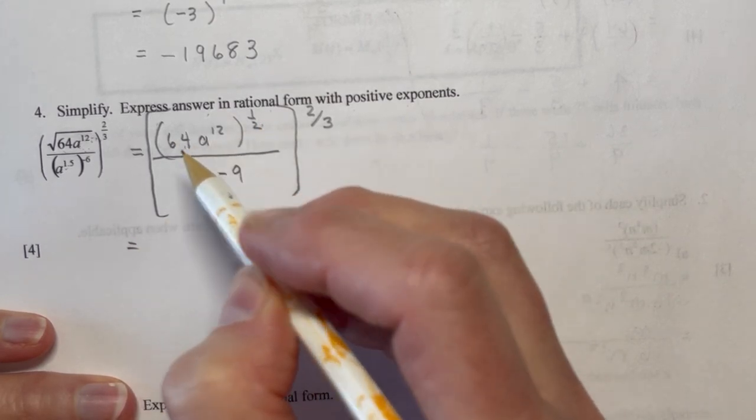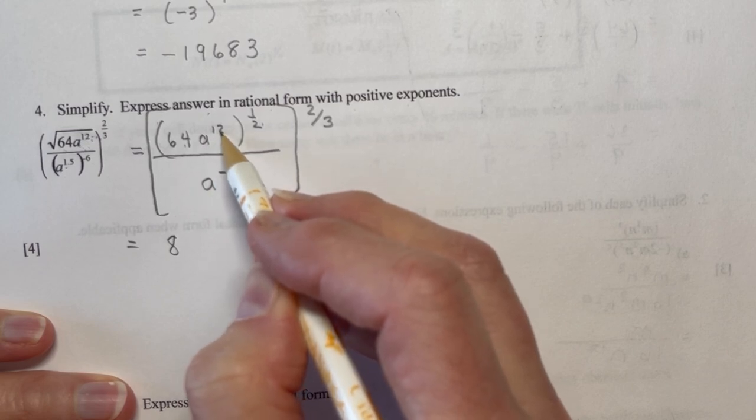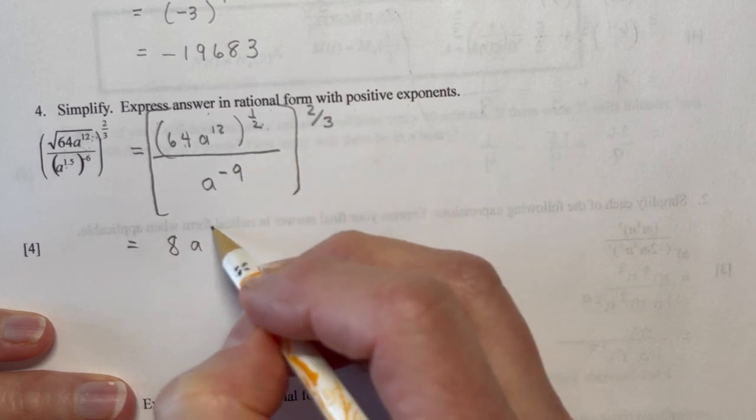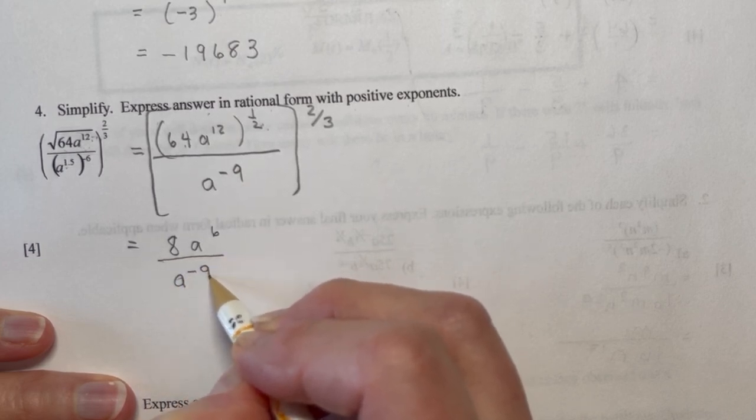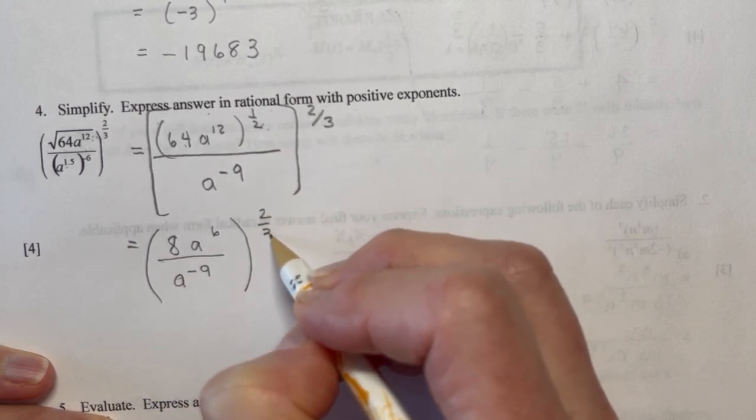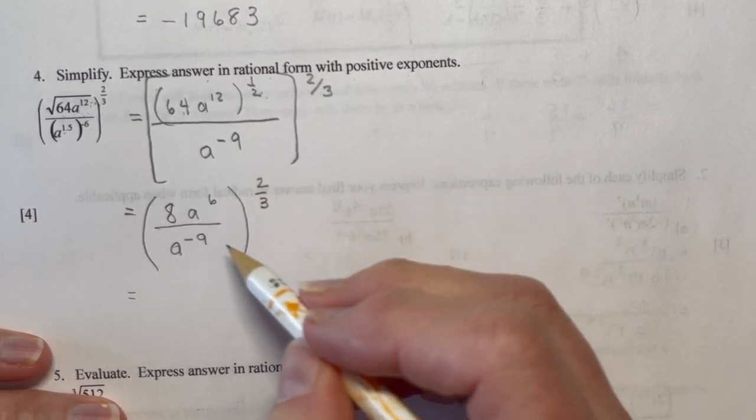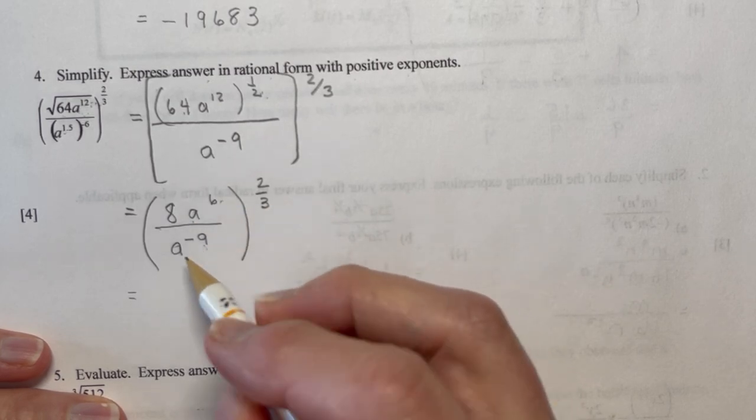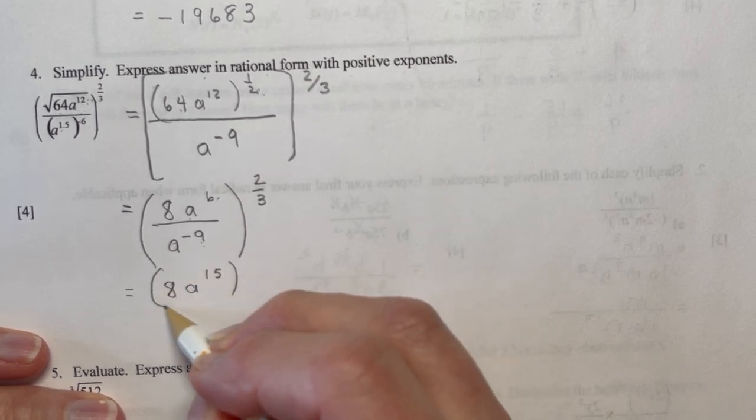So 64 to the half is the square root of 64, which is 8. And a to the 12 to the half is a to the 6, because I'm multiplying. That will give me 12 over 2, which is 6. And in the denominator, I still have a to the minus 9, and I have this to the 2 thirds. Now, there's lots of different orders that you could do this in. There's no right or wrong way. But I would say, okay, well, I have a to the 6, and I've got a to the minus 9 here. So that's going to give me 8a to the 15th, now to the 2 thirds.